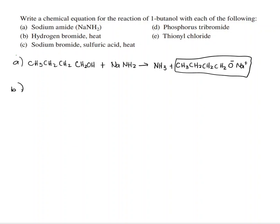Part B: 1-butanol with HBr. CH₃CH₂CH₂CH₂OH plus HBr. What happens is the H and the OH get together to form H₂O.